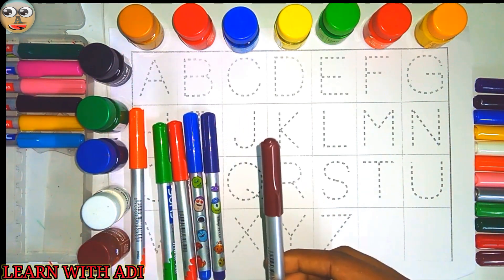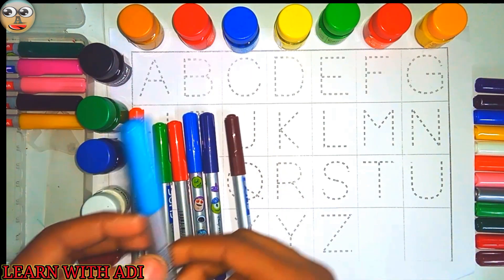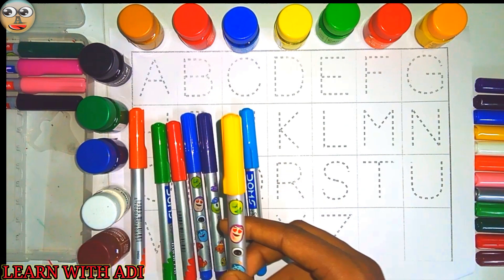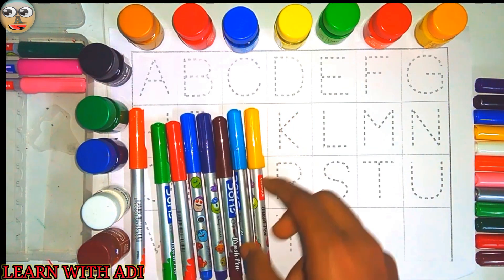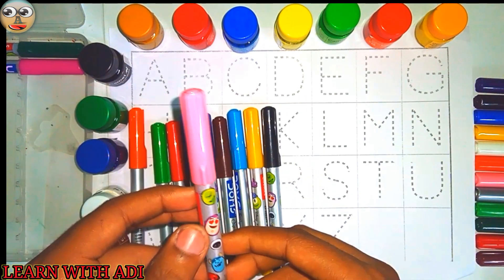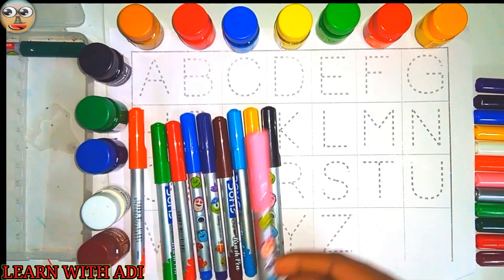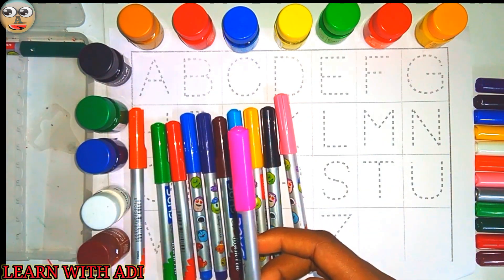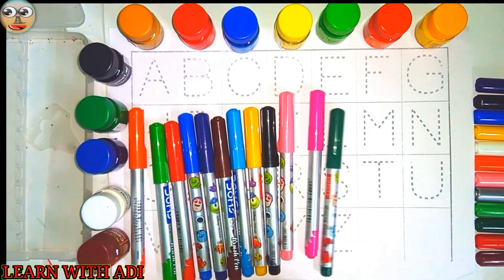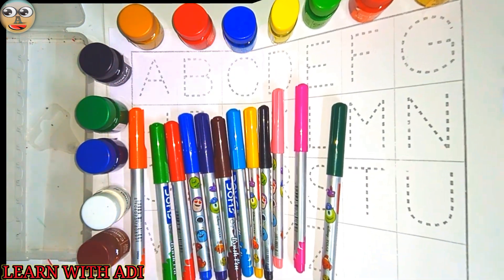This is brown color, this is sky blue color, this is yellow color, this is black color, this is peach color, this is pink color, and this is dark green color. Let's start the class.